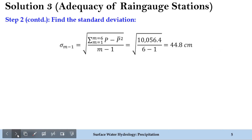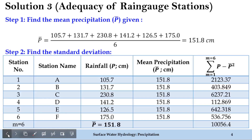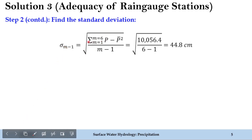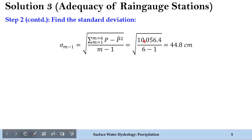How are we actually finding the standard deviation? In the previous table we obtained (P minus P-bar) whole squared for each station. This alone is not the standard deviation — we use these values to compute it. The formula for standard deviation is the square root of the sum of (P minus P-bar) squared divided by (m minus 1), where m is the number of rain gauge stations. Substituting all values, we get the standard deviation as 44.8 cm.